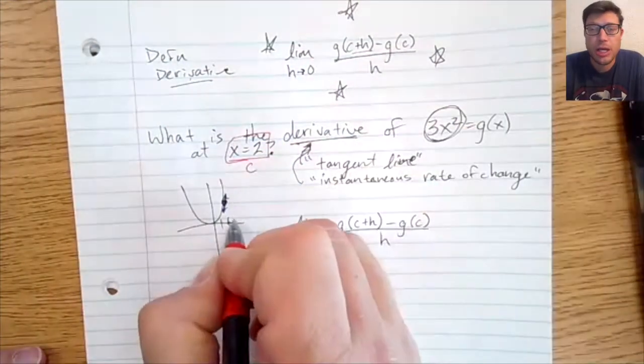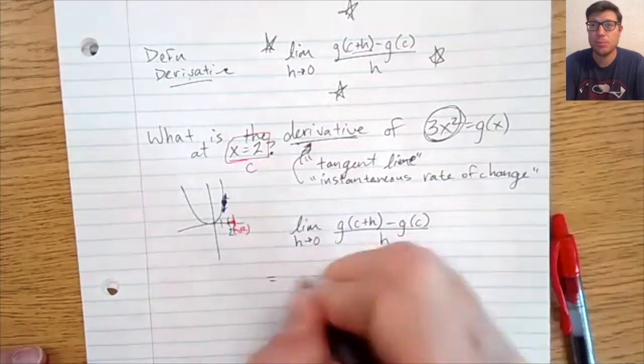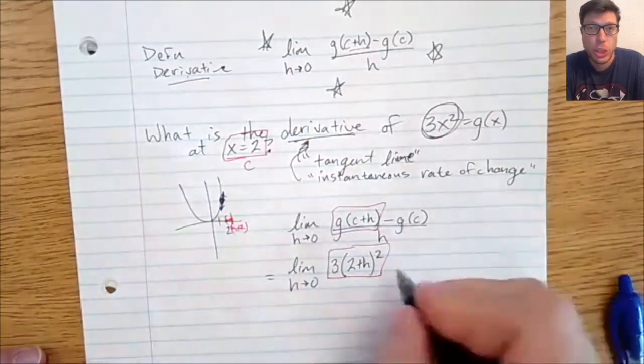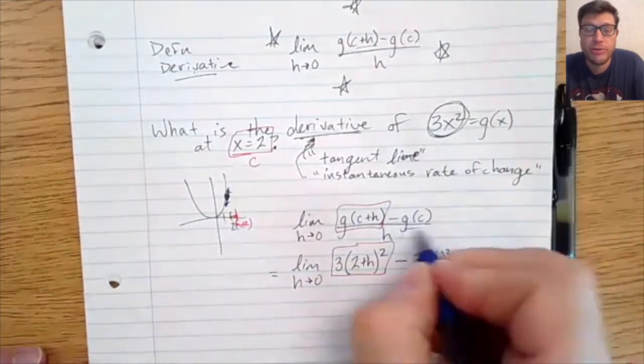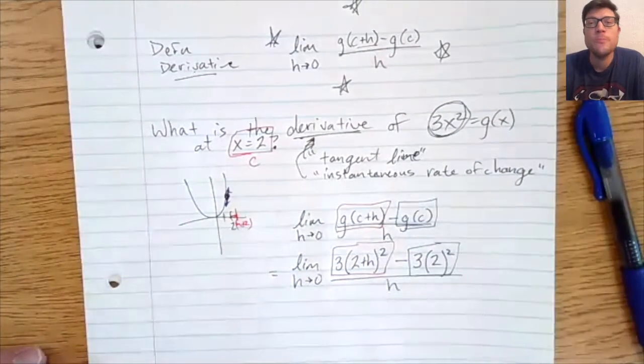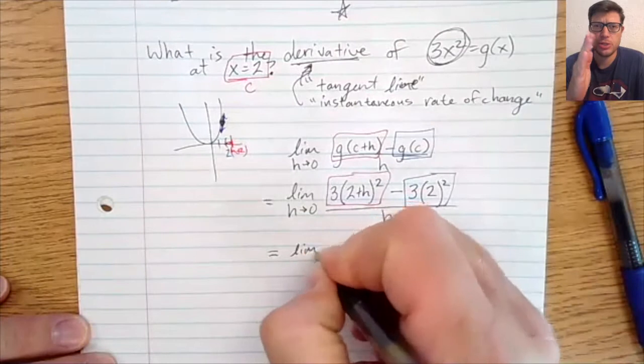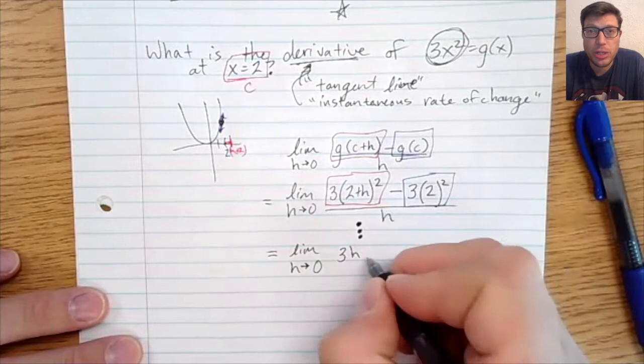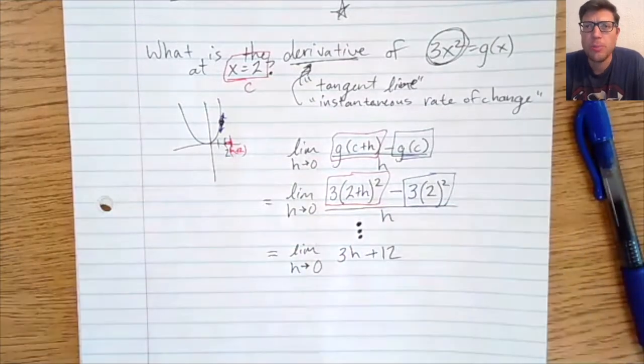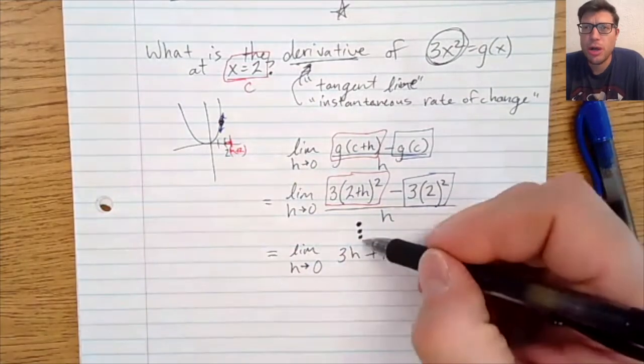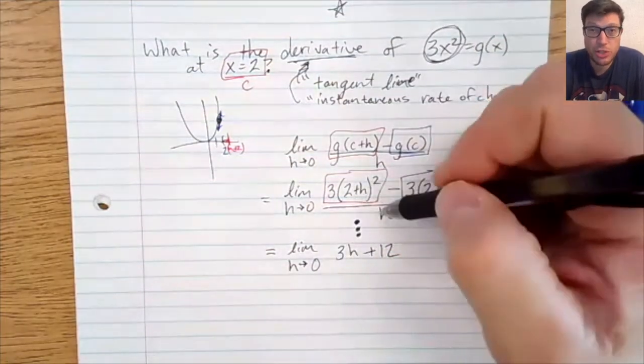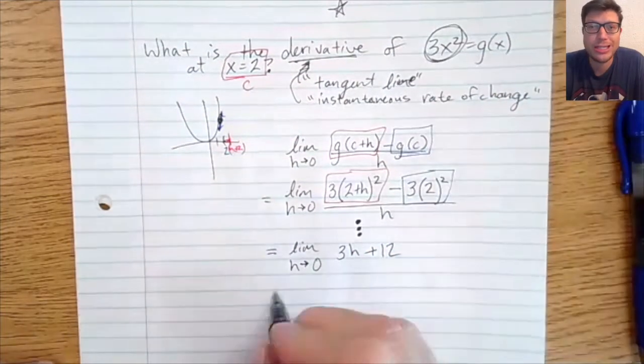Then the limit definition lets us plug in some numbers. We can specifically define c to be two. We're talking about the derivative at a specific location. We're still going to use this idea of going from two out by some small h amount and then decide how that really impacts what we're trying to determine. So the limit as h goes to zero of our function. Remember that you need to do the math. I left you the dots in class to do.